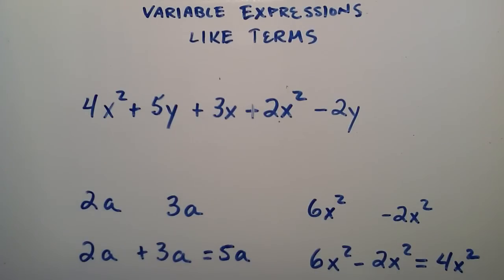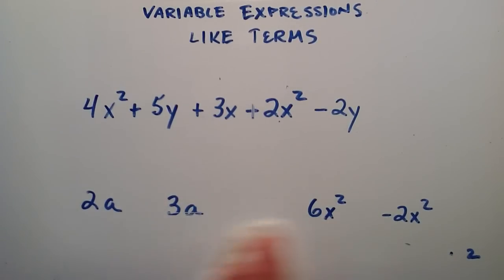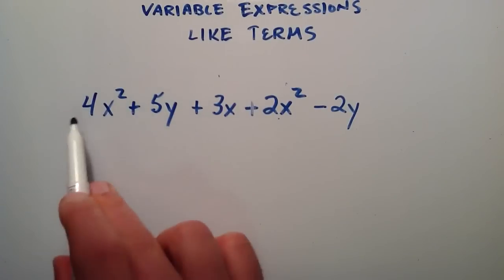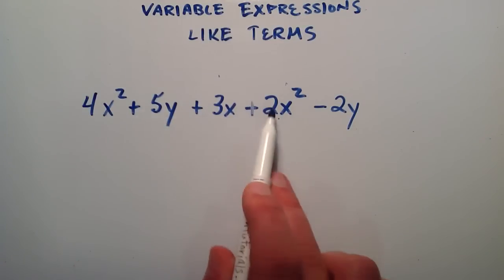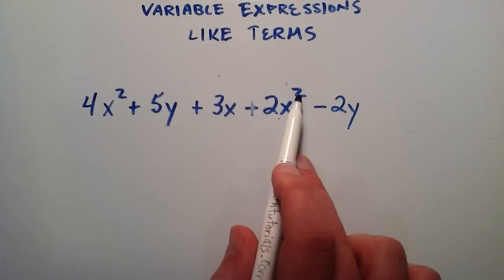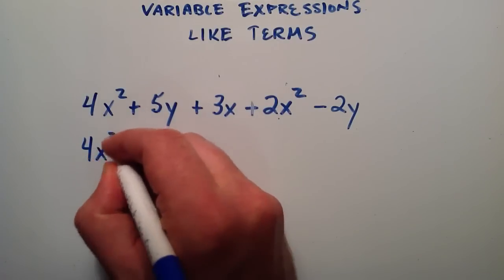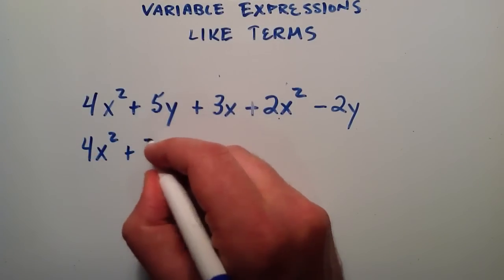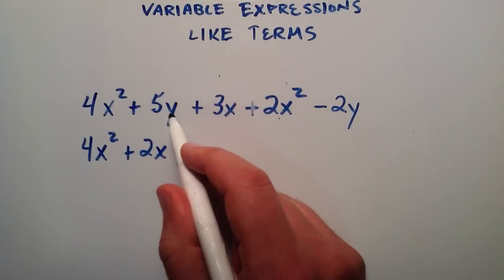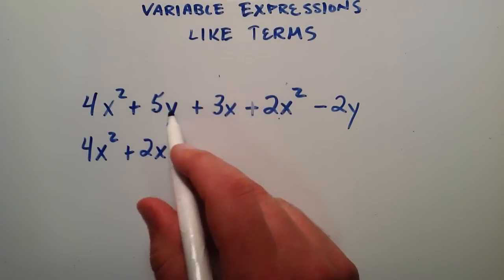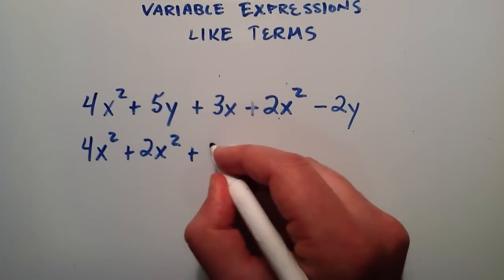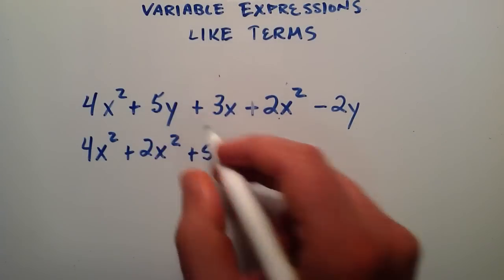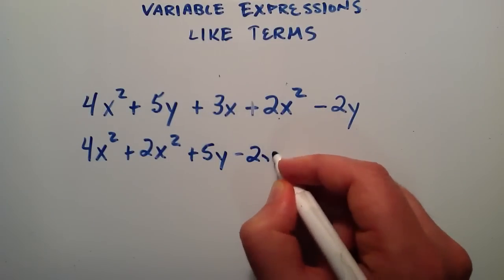So let's use this information to simplify the expression that I wrote above. So looking at this first term here, if you covered up the coefficient, you'd be left with x squared. So we're looking for other coefficients with x squared now, and there's one more. We have the 2x squared. So we're just going to write the 4x squared and 2x squared together, since they're like terms. So looking at this second term here, we have 5y. So we're looking for other terms with the y in them, and we have one at the end here. So we're going to write those two together. We're going to write the plus 5y and subtract the 2y over here.